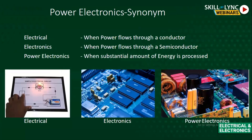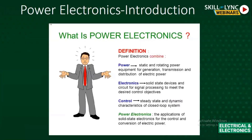As a quick definition: electrical refers to the free flow of power through a conductor; electronics means the controlled flow of power through a semiconductor; and power electronics is the combination of both — the flow of power through a conductor and semiconductor in a controlled manner. So power electronics means controlled power flow.